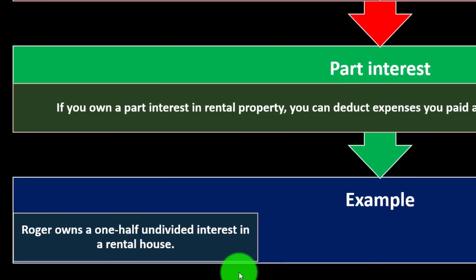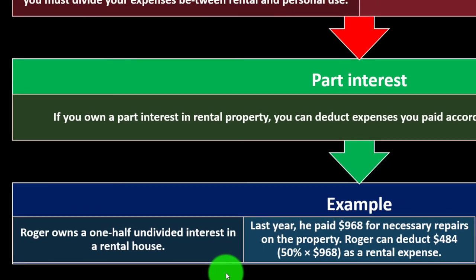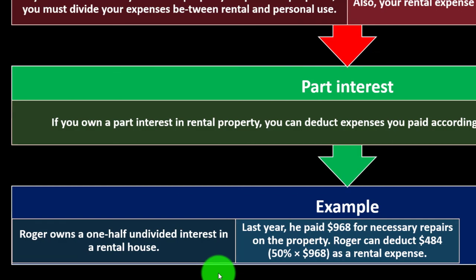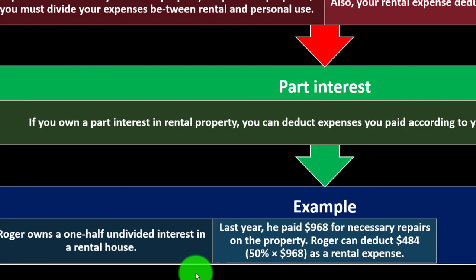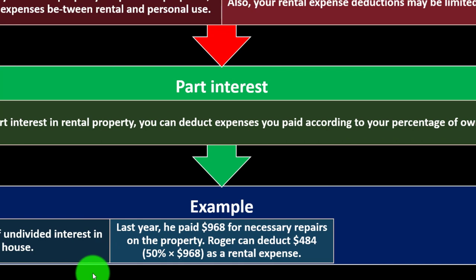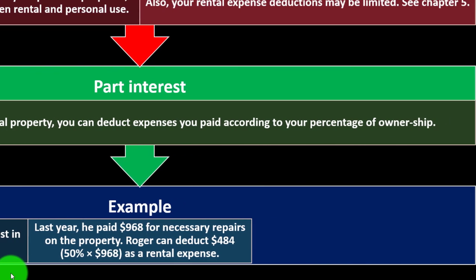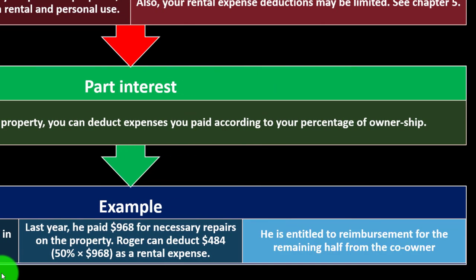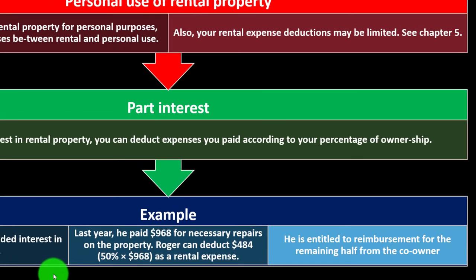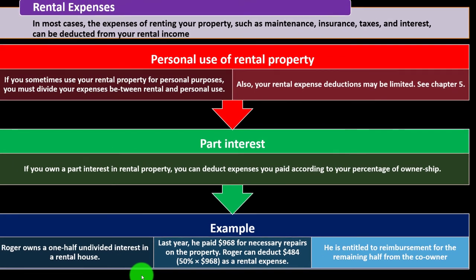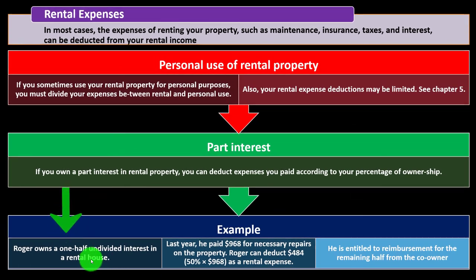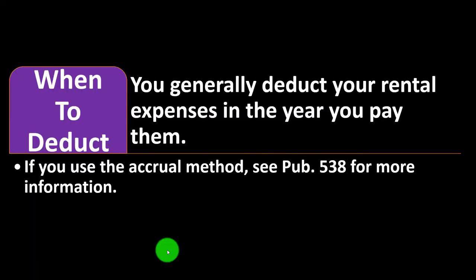Example: Roger owns a one-half undivided interest in a rental house. Last year he paid $968 for necessary repairs on the property. Roger can deduct $484, which is 50% of $968, as rental expenses, and is entitled to reimbursement for the remaining half from the co-owner.